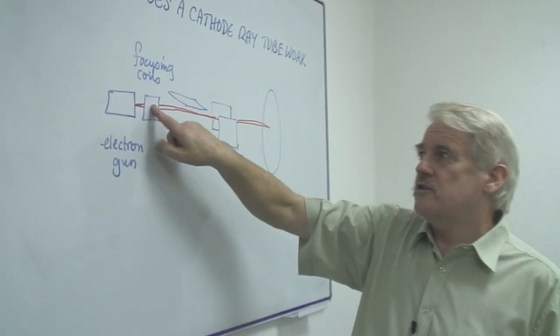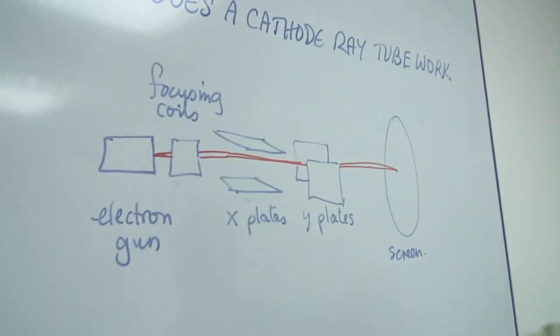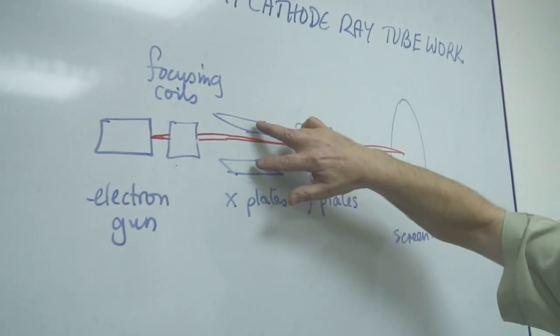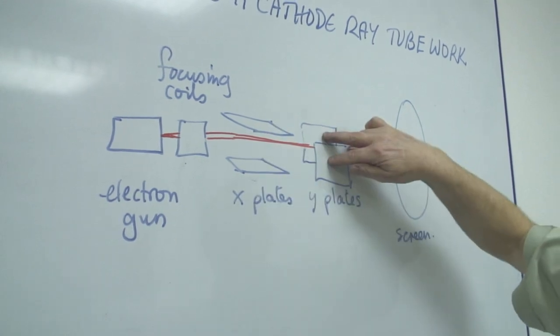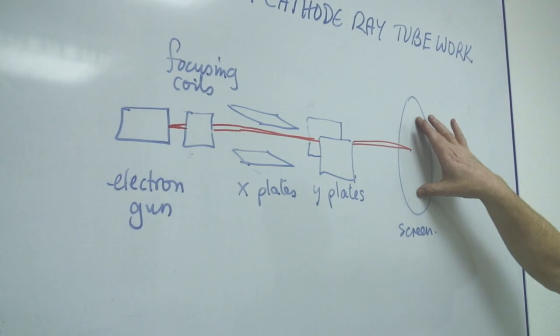There's focusing coils just after the electrons come out to make the beam sharp and then they pass between two sets of plates, we call X plates and Y plates before impinging on the screen.